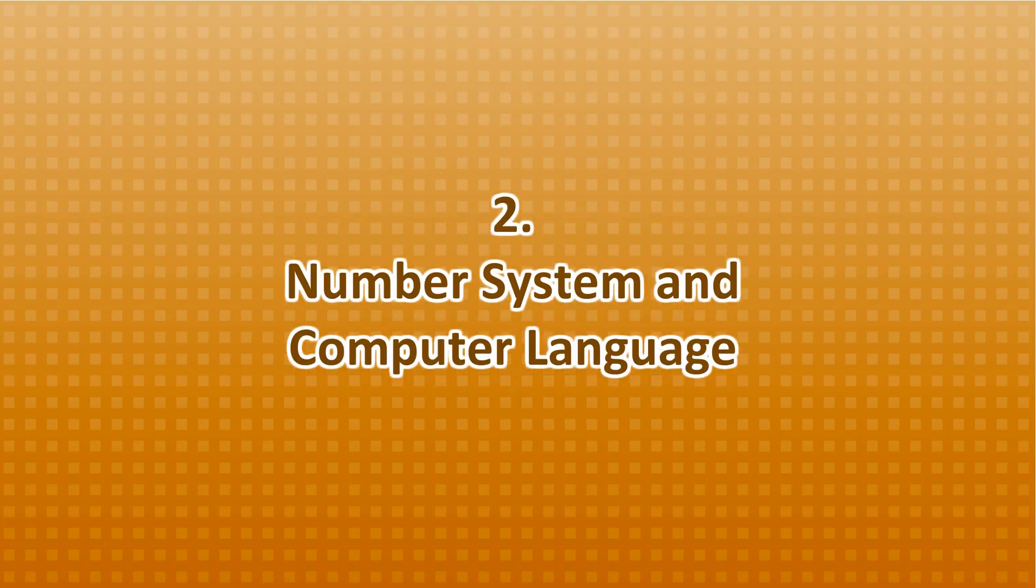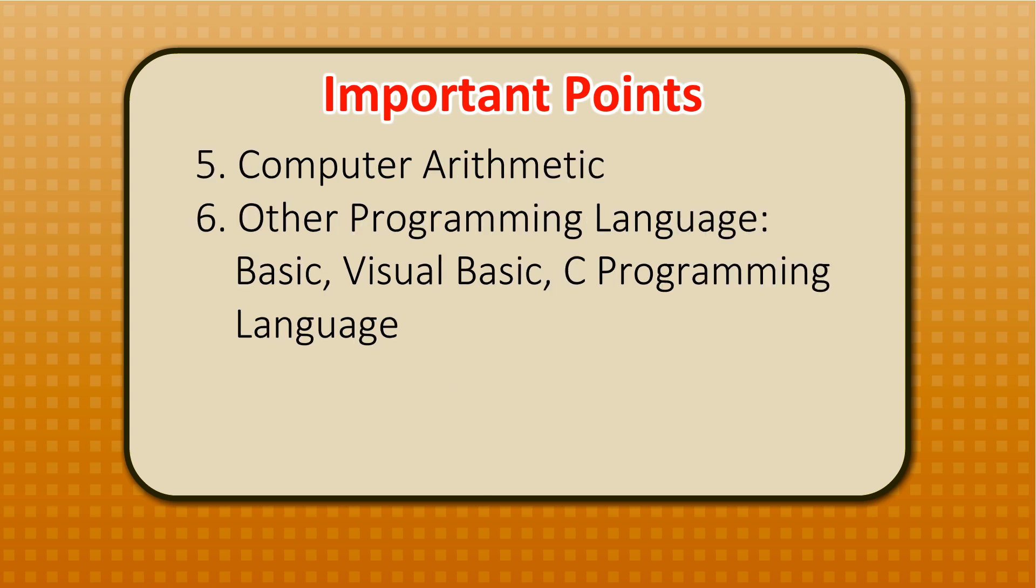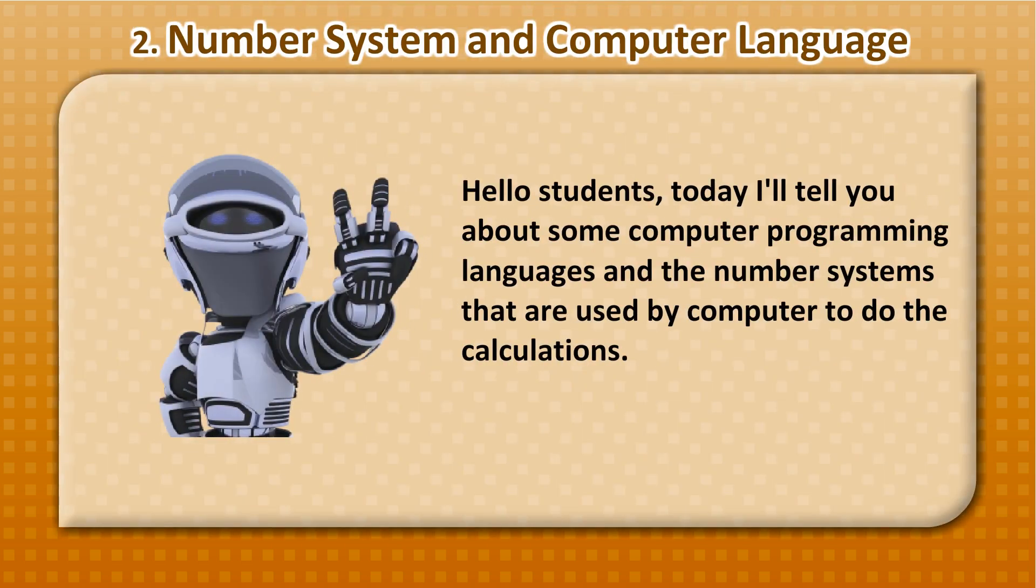Chapter 2: Number System and Computer Language. Important points include number systems, binary number system, conversion from binary to decimal numbers, conversion from decimal to binary numbers, computer arithmetic, and other programming languages including BASIC, Visual BASIC, and C programming language. Hello students, today I'll tell you about some more computer programming languages and the number systems that are used by computers to do calculations.